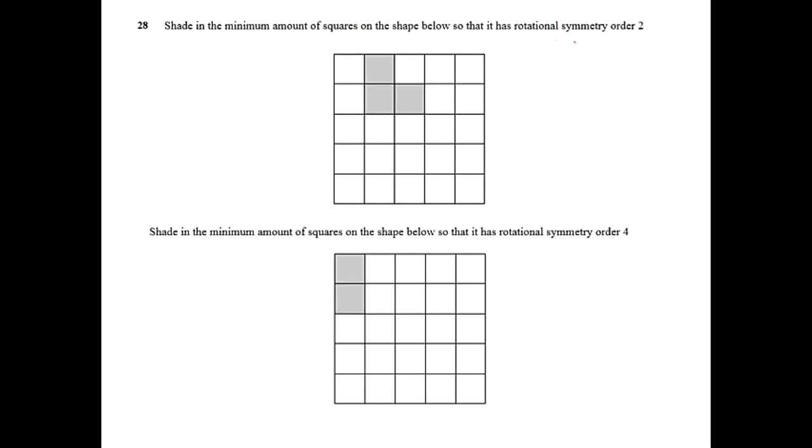For this one we need to shade in squares for rotational symmetry order 2 and then order 4. Rotational symmetry order 2 means the same shape when it's upside down.